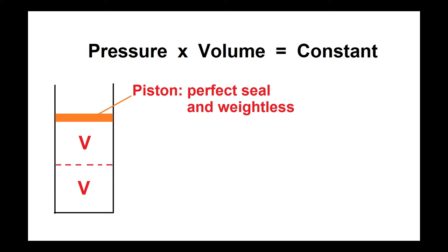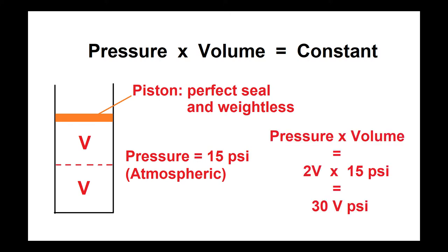Now an important thing to remember when working with pressures on planet Earth is that you're surrounded by an atmosphere, and at sea level the pressure is 15 PSI. So the pressure is 15 PSI, the volume is 2V, and so we have a pressure times volume of 30V PSI.